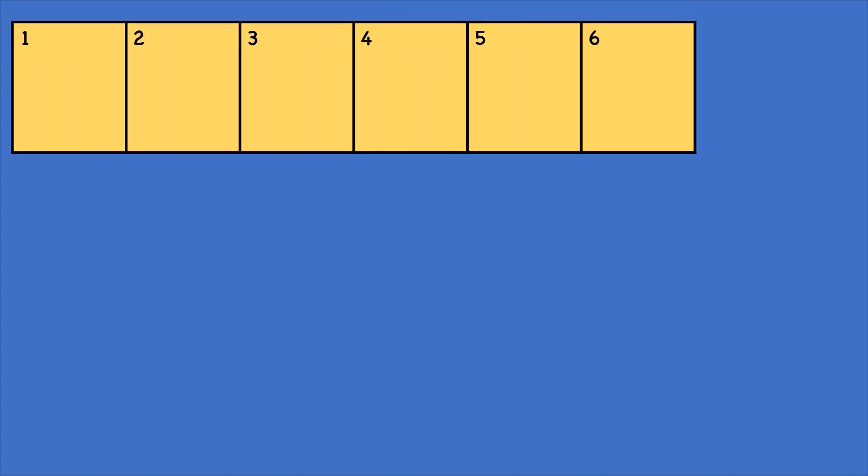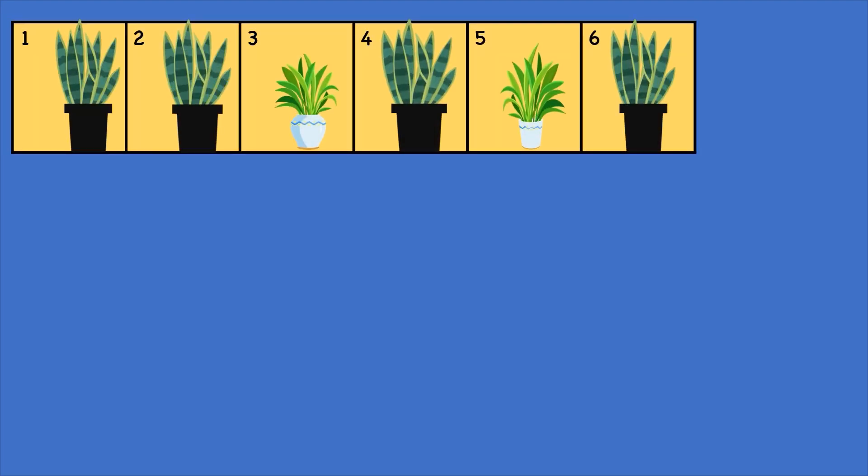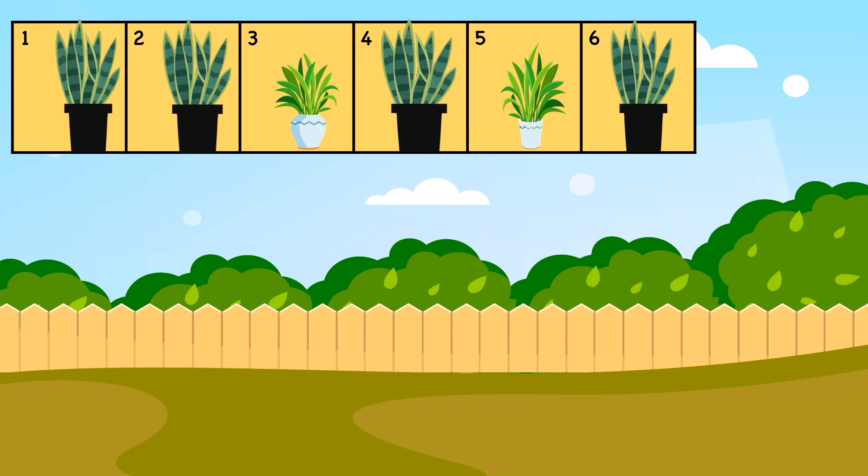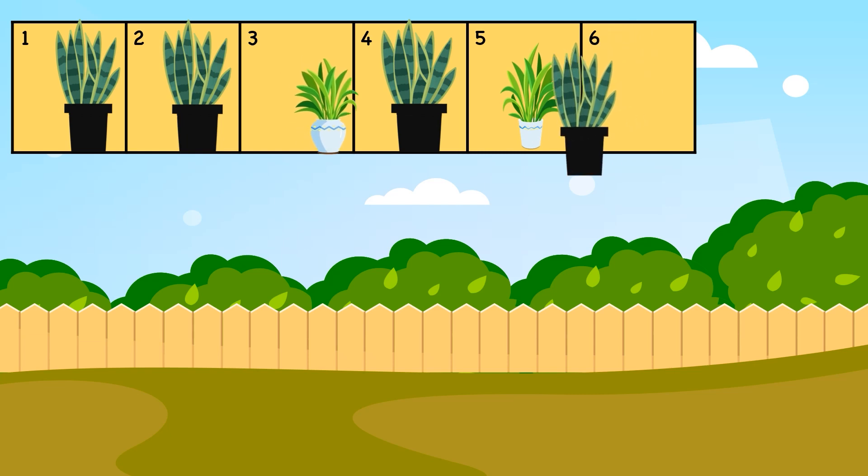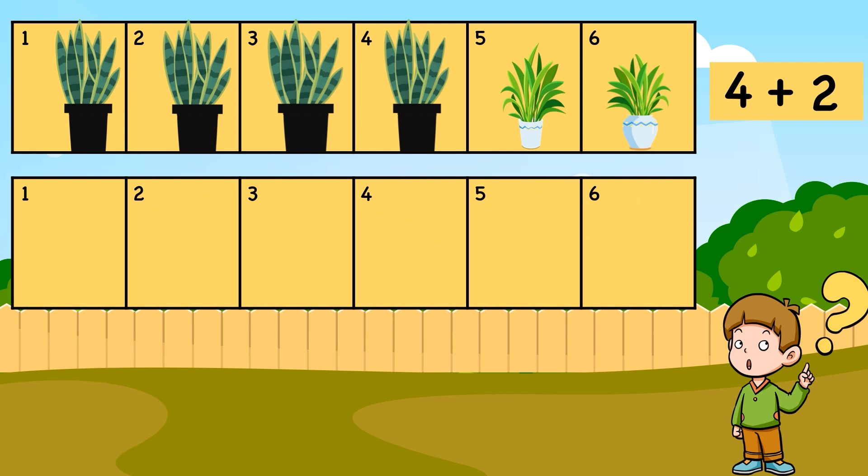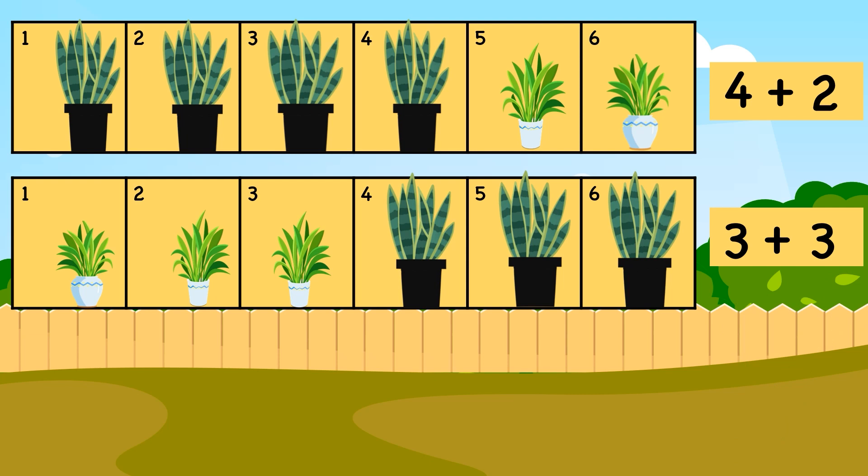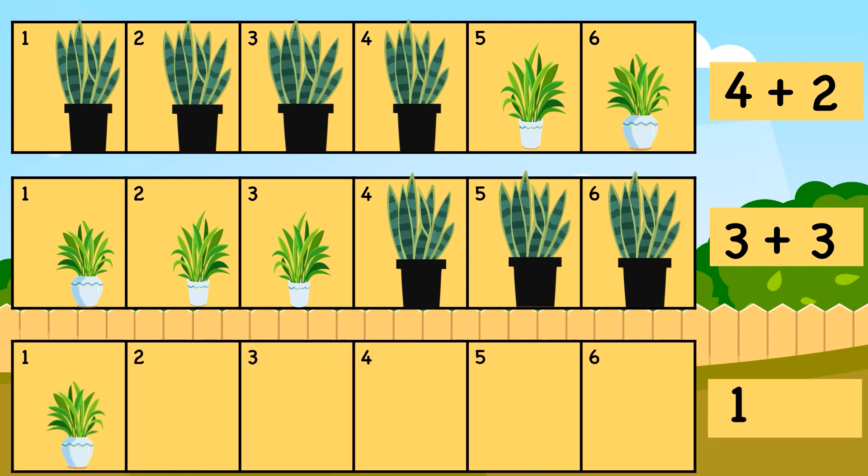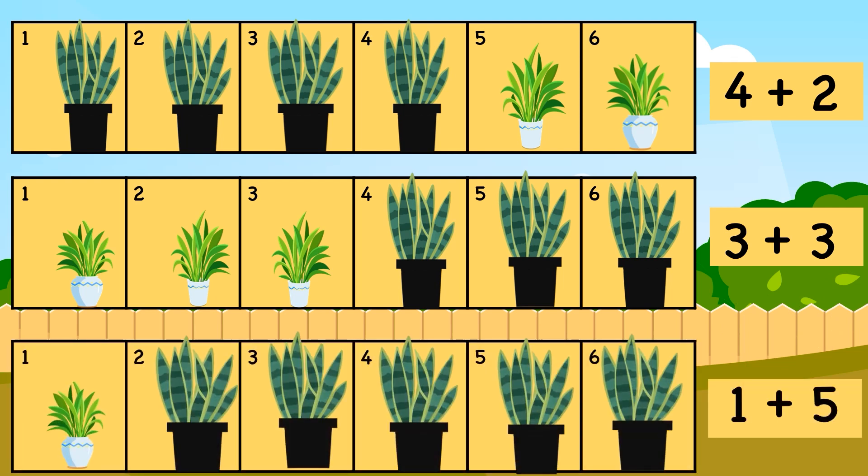Look at these squares. These are six squares for six plants I got for my garden. Some plants are tall and rest are short. So, either it could be four long and two short plants. Can you think of any other ways? Yes, there can be three short and three long plants as well, or one short and five long plants.